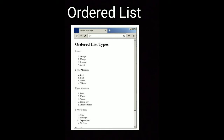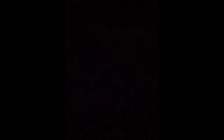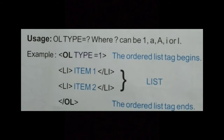This way you can type an ordered list in different ways. The OL tag uses a type attribute. OL type can be 1, lowercase a, uppercase A, i, or capital letter I. For example, the tag is: open angle bracket, OL type equals to 1, close bracket — the ordered list tag begins.